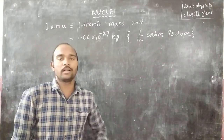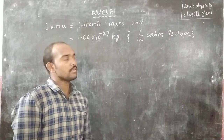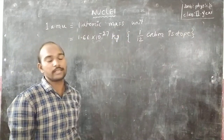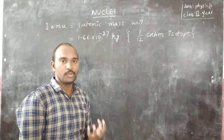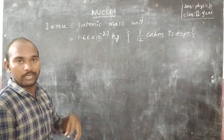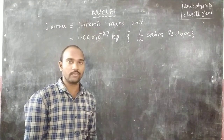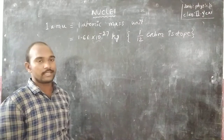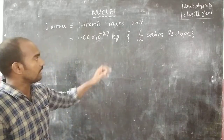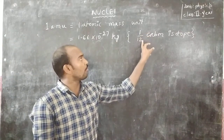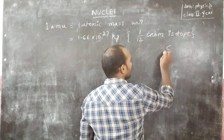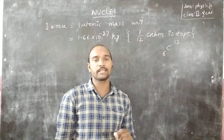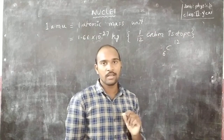Now let us discuss atomic mass unit. One AMU, or one atomic mass unit, is the standard international unit used especially to measure nuclear mass and binding energy. One AMU equals 1.66 × 10⁻²⁷ kg. It is taken from one-twelfth the mass of a carbon-12 isotope, since carbon has atomic number 6 and mass number 12, giving us one nucleon mass as the standard.